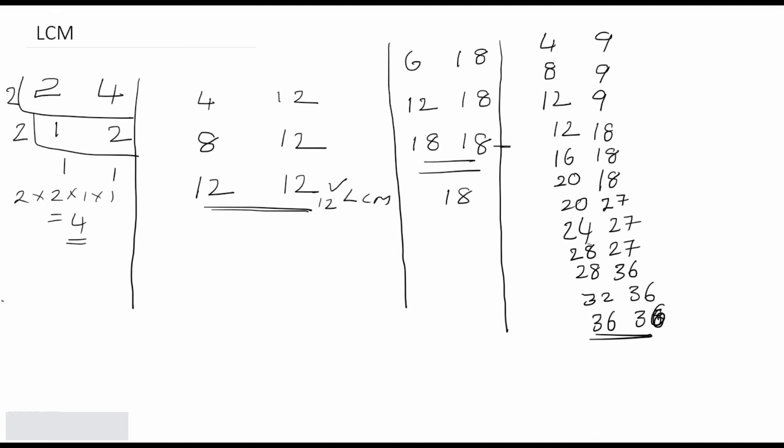So like this we can find the LCM of any two numbers using this different method. However, for implementation in programming, this method takes many iterations. Now we can also similarly find the GCD of two numbers using a related approach.